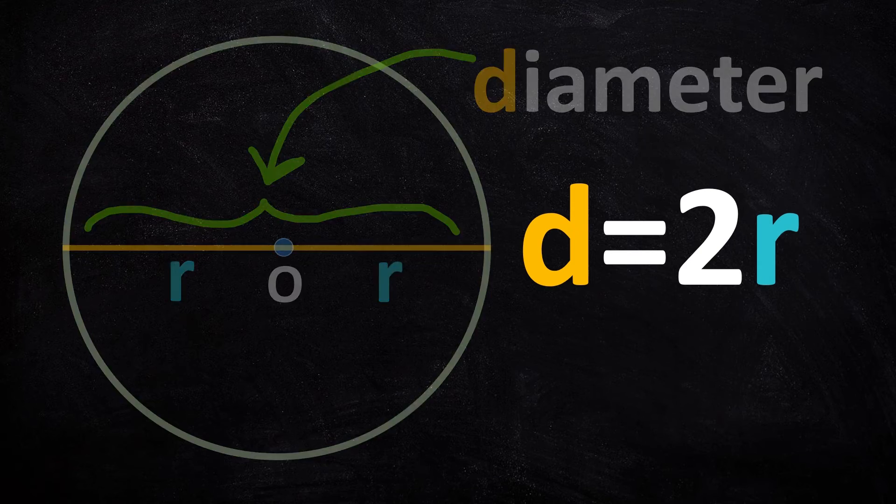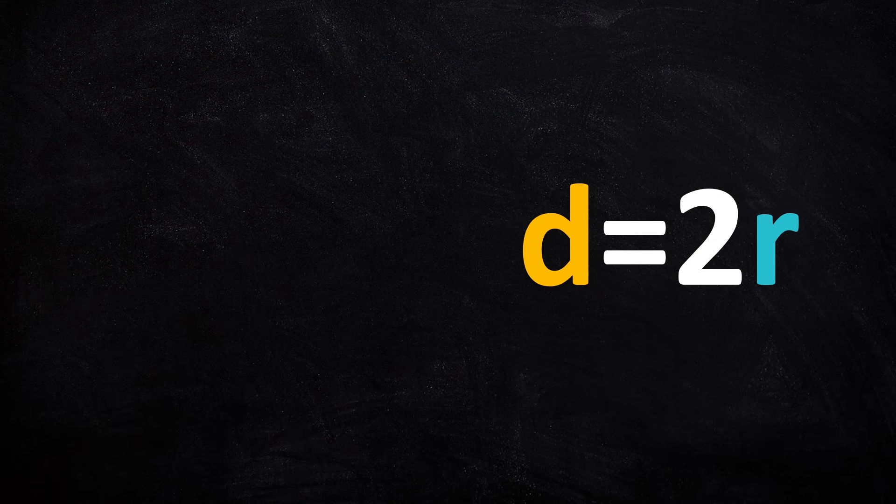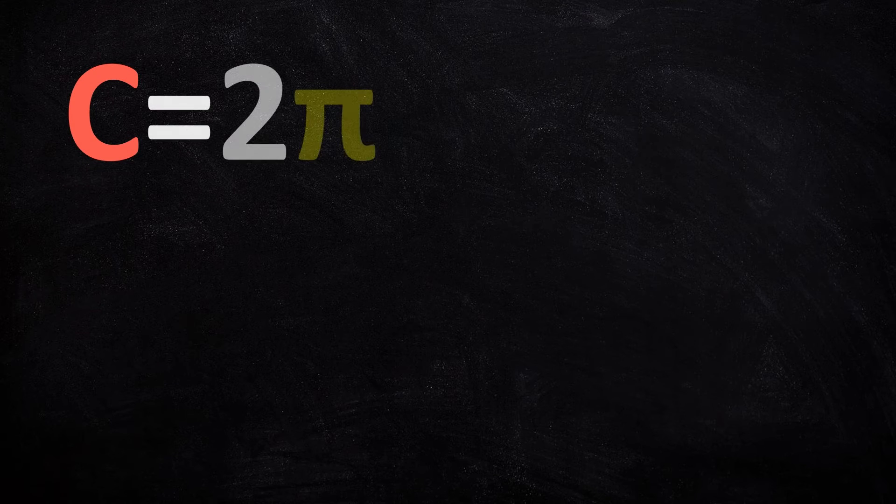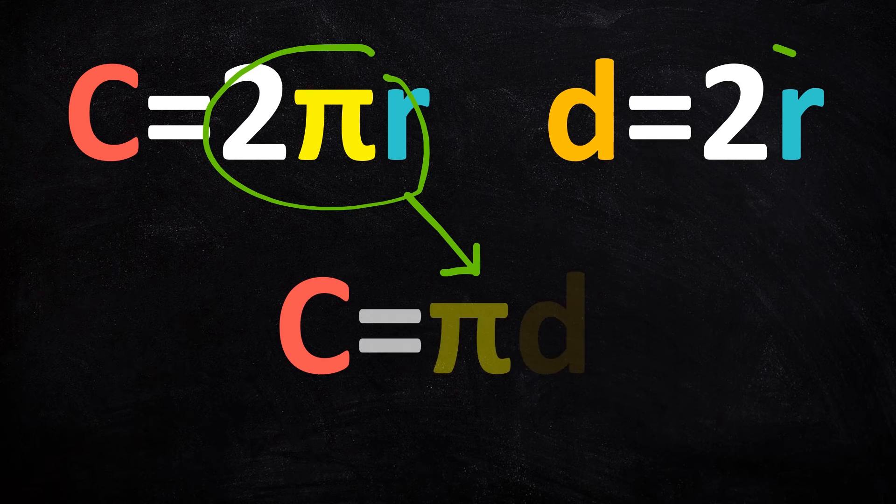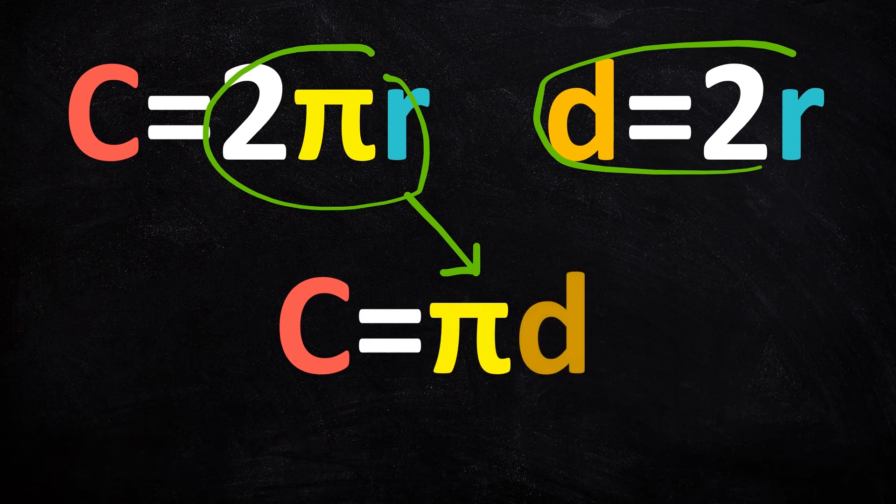And how does that help us when finding the circumference of the circle? Circumference is 2 pi r. I just said the diameter is 2 r. So that means the circumference equals pi times the diameter.